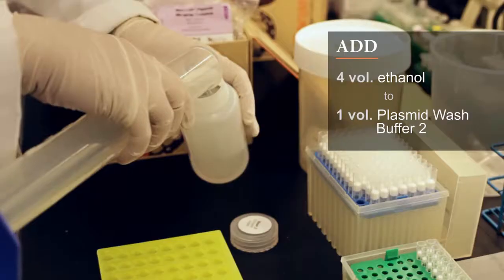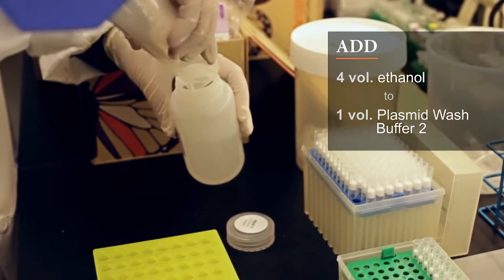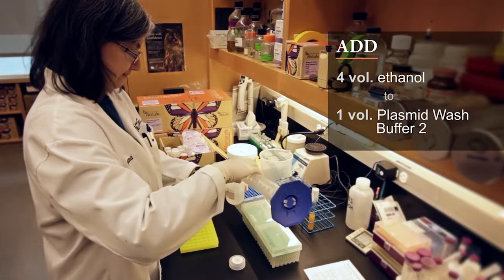You will need to add four volumes of ethanol to one volume of Plasmid Wash Buffer II according to the instructions on the bottle's label.